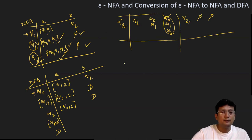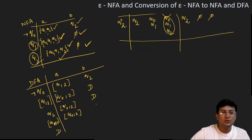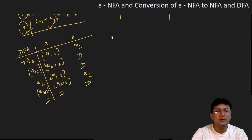Now Q012 on getting symbol A — taking the union of transitions from Q0, Q1, and Q2 on A — gives Q012. Q012 on getting symbol B: Q0 on B goes to Q2, Q1 on B is undefined, Q2 on B is undefined. The union of these gives Q2. The dead state D on any symbol A or B transitions back to the dead state only. This completes the transition table for the DFA.